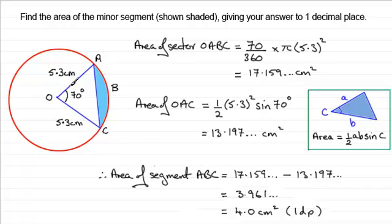The other way would be to work out this angle round here, which would be 290 degrees (360 take away 70 degrees). Work out the area of the major sector, and then add on the area of the triangle which we worked out. So either way, that's how you could work out the area of the major segment.